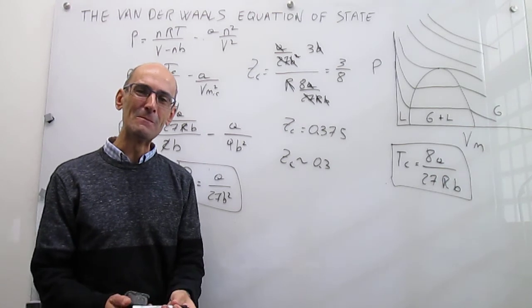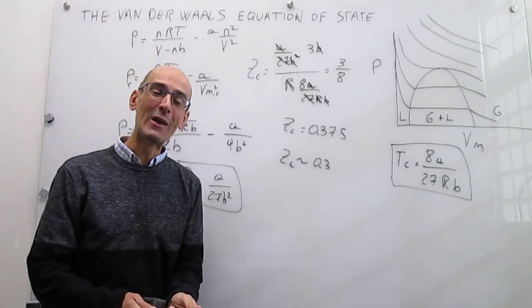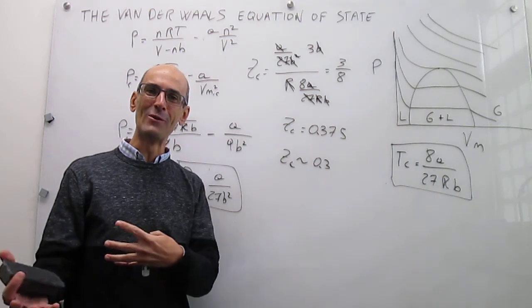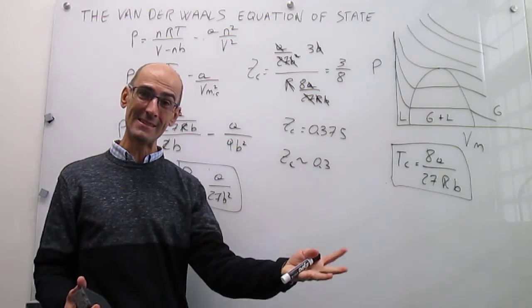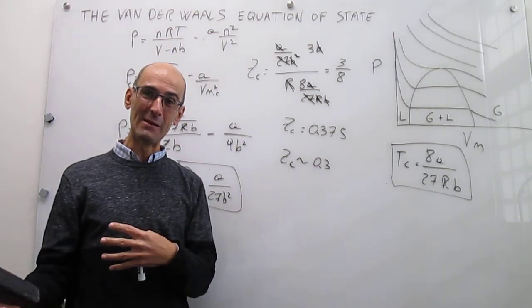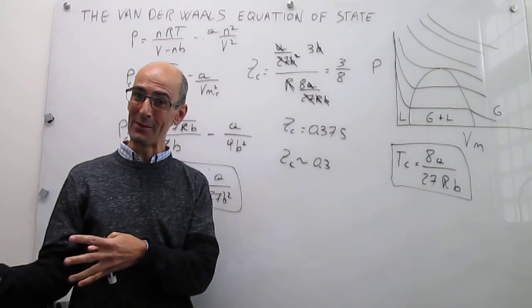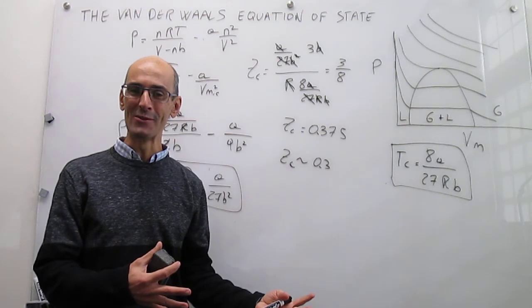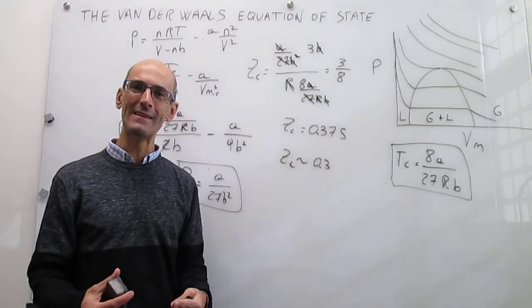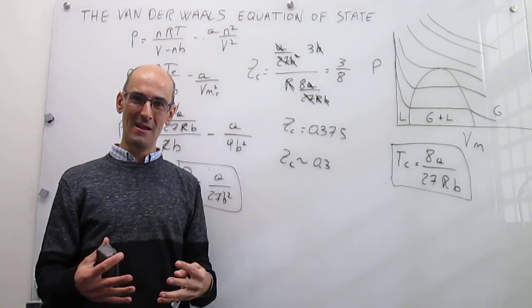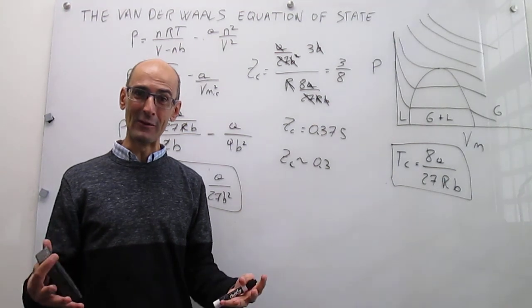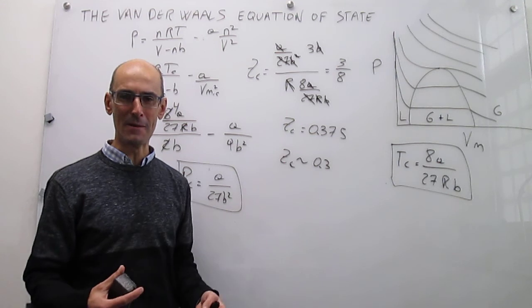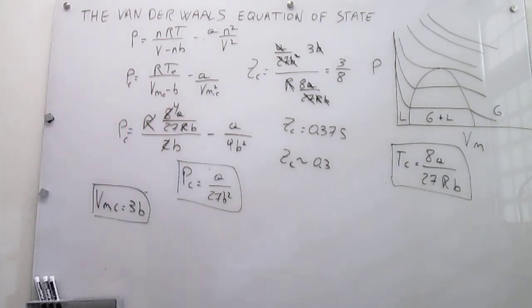To wrap up: in this video we've seen that the Van der Waals Equation of State leads to condensation and a critical point. We've derived relationships between the A and B parameters and the critical parameters of the gas, and we've seen that the critical compression factor of 0.375 captures experiment reasonably well — demonstrating that simple corrections for molecular attractions and repulsions already bring you quite close to reality.